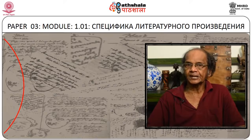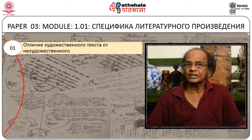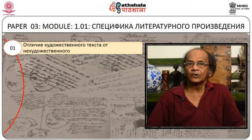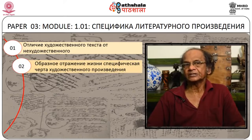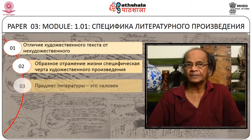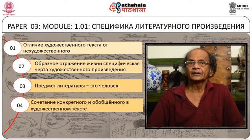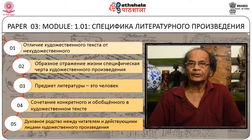Характер в художественном произведении имеет широкое значение. Таким образом, образность является главной спецификой художественного произведения, которое отличает его от научных или от нехудожественных текстов. Основные моменты нашей лекции таковы: отличие художественного текста от нехудожественного; образное отражение жизни как специфическая черта; предмет литературы – это человек; сочетание конкретного и обобщенного; и, наконец, духовное родство между читателем и действующими лицами.